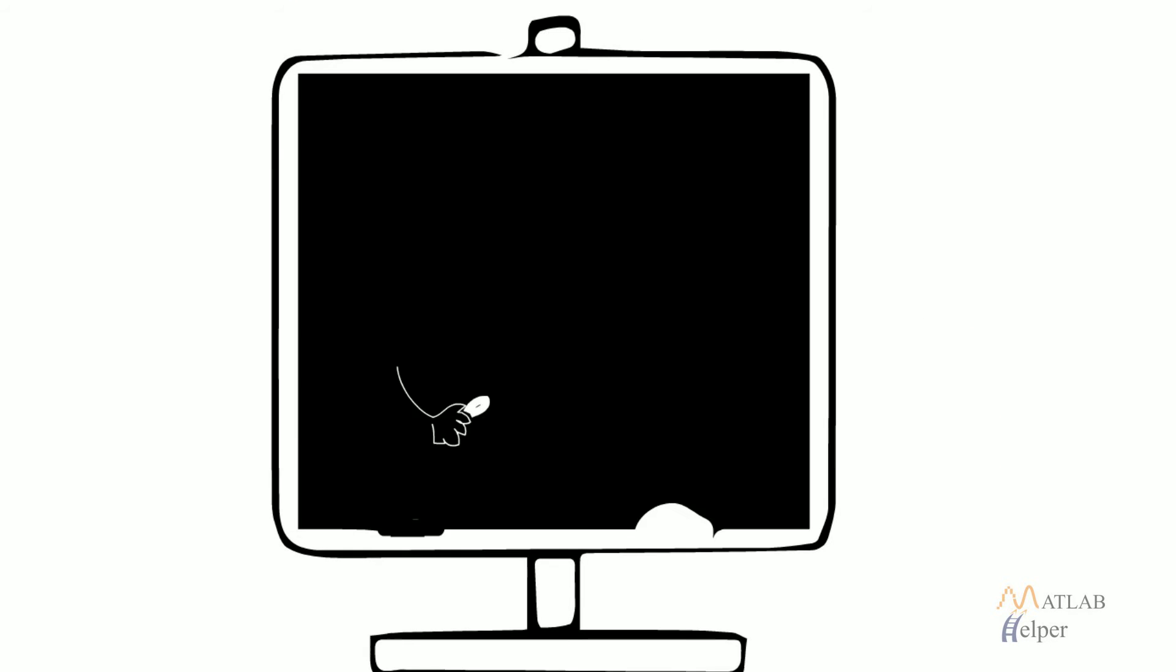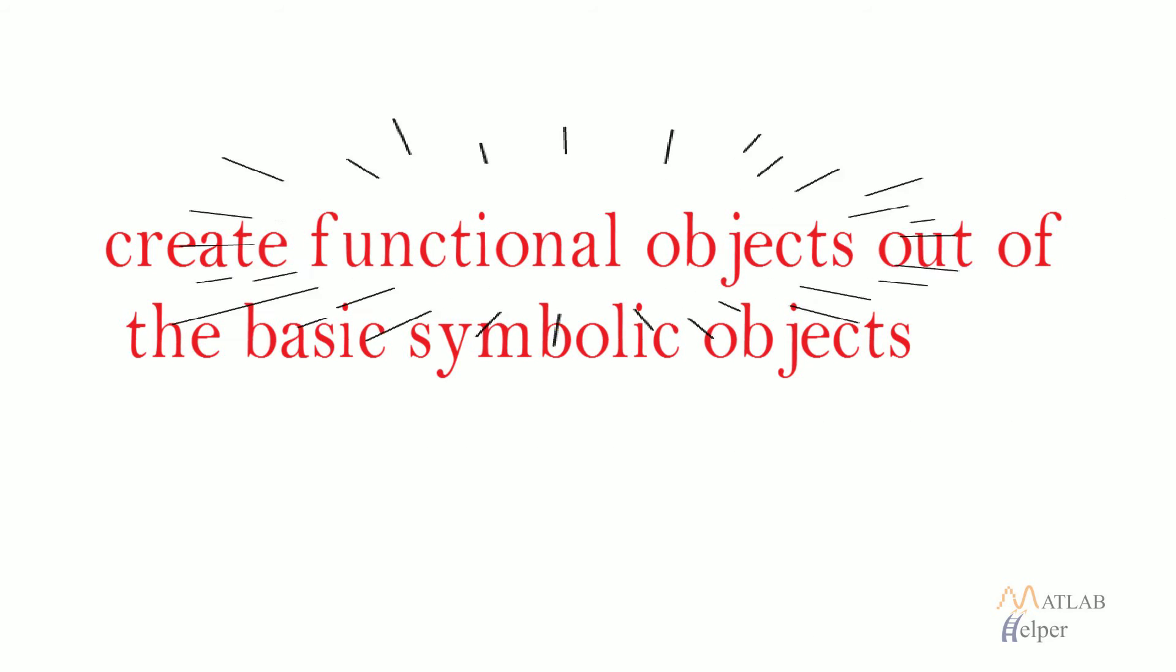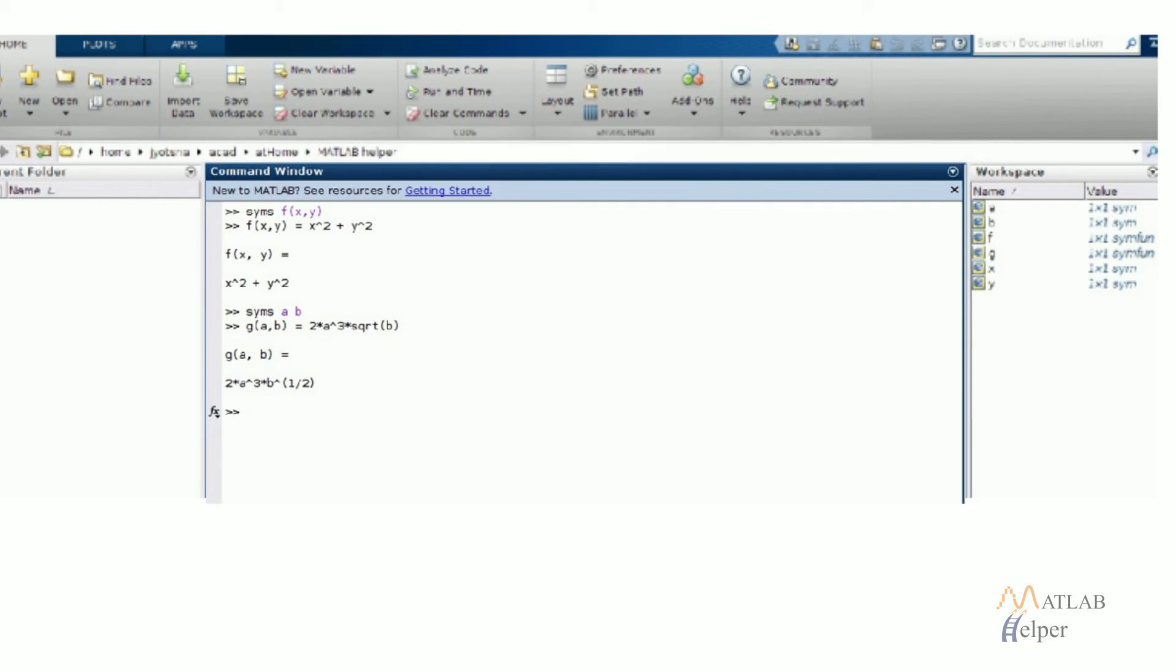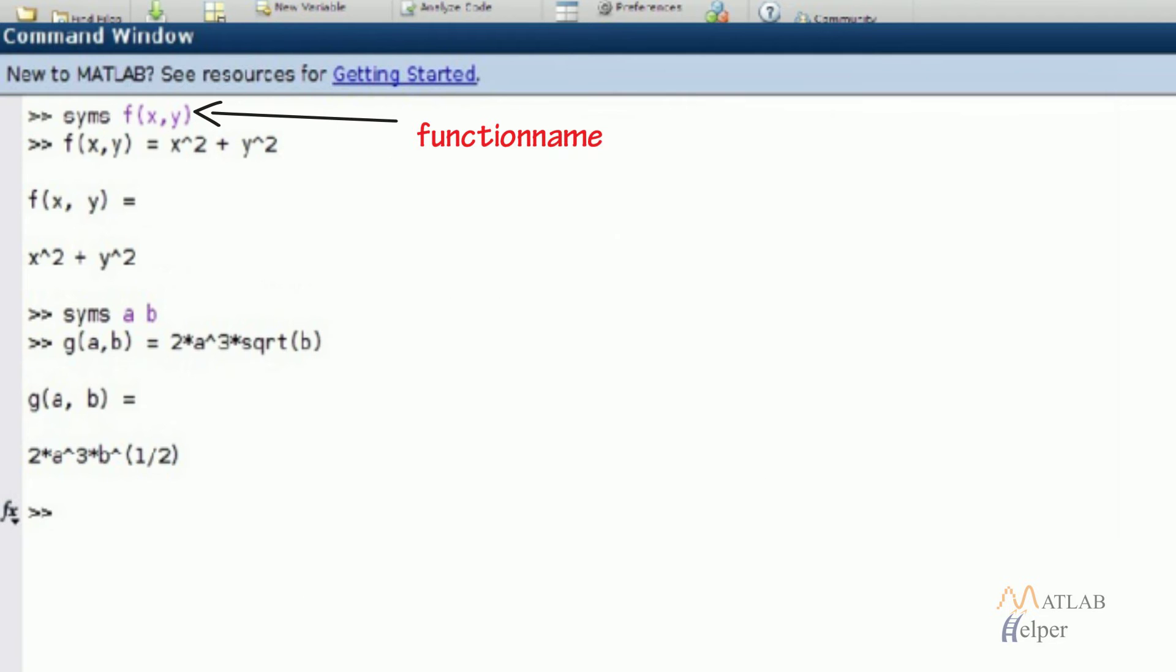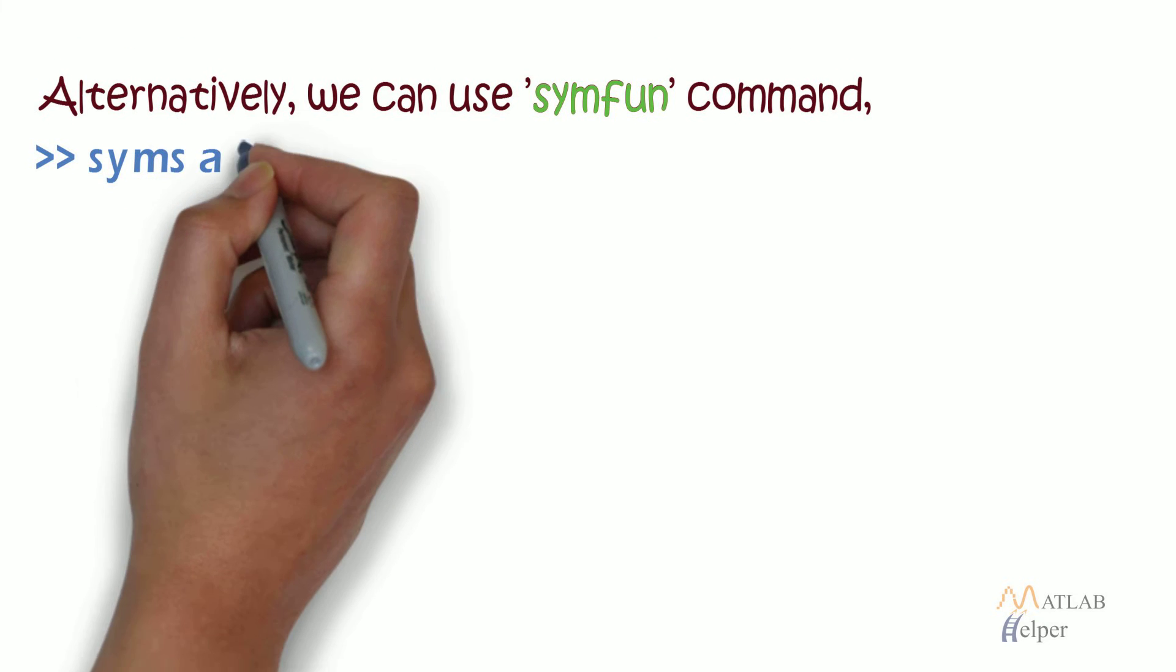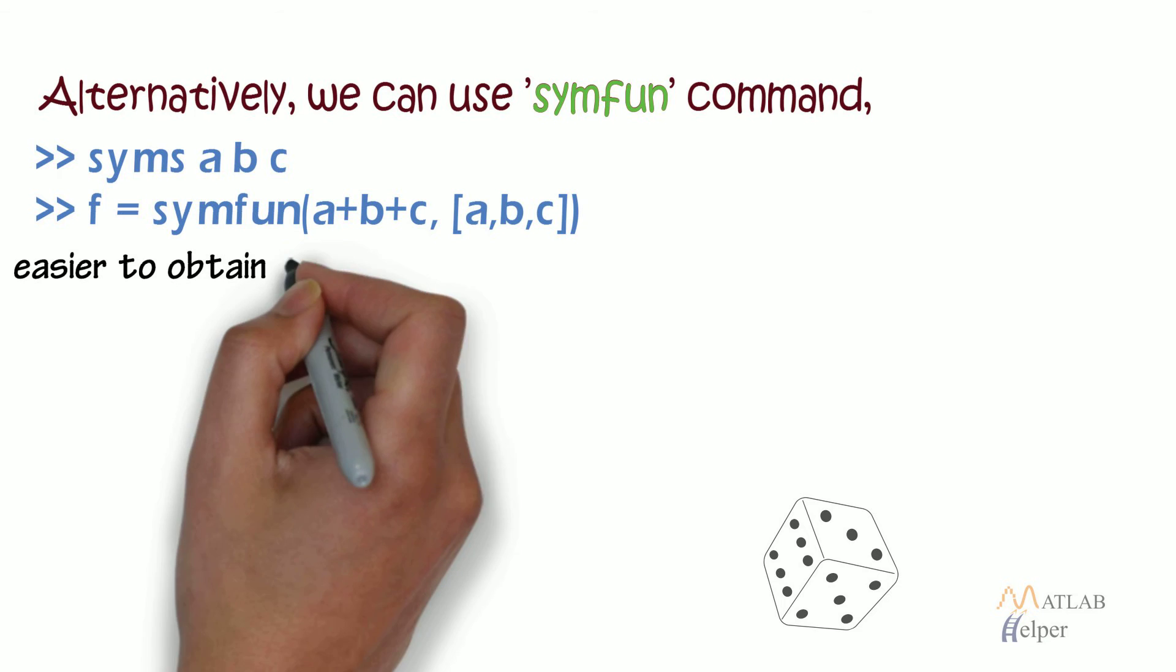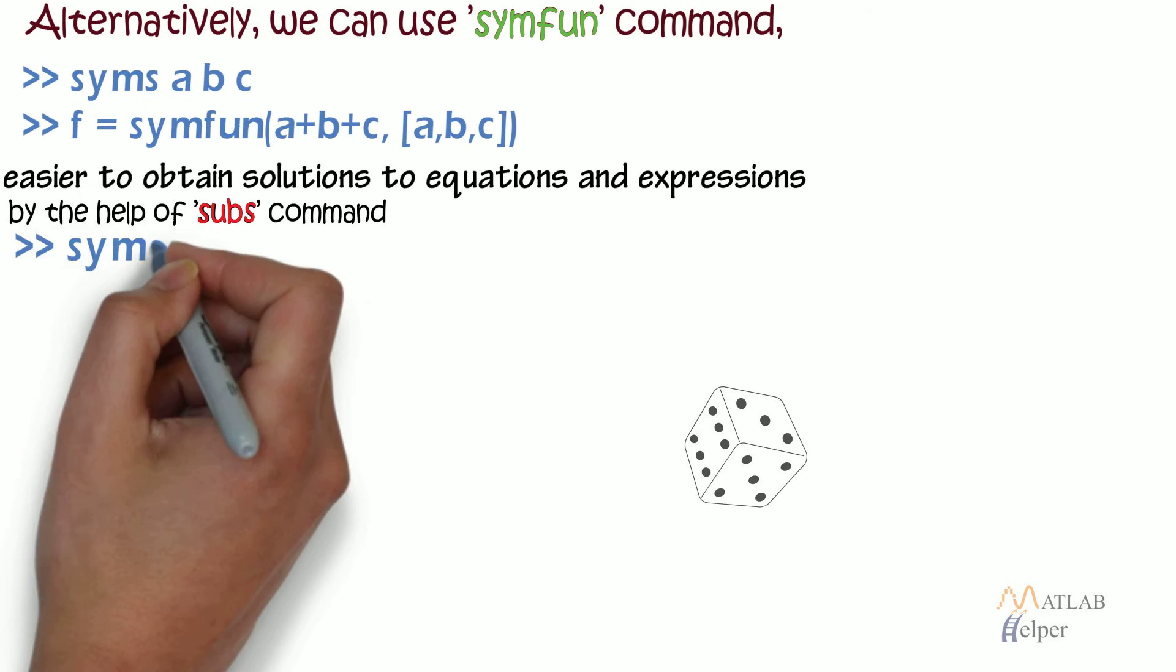In the similar fashion to how we created symbolic objects, we can also create functional objects out of the basic symbolic objects. It can be either done by following the parenthesis notation as shown in the picture which is function name within parenthesis variables involved. Alternatively, we can use symfun command. The notion of functional objects makes it easier to obtain solutions to equations and expressions.